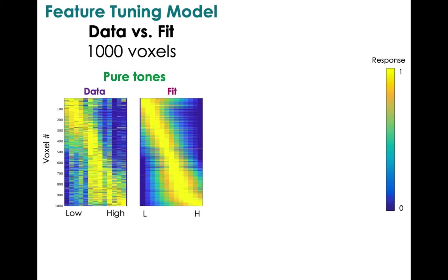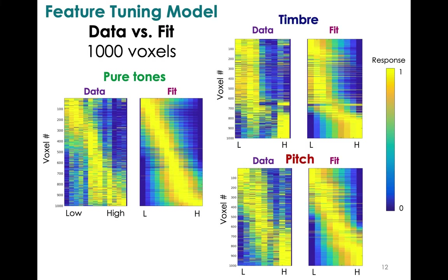Now looking at a whole bunch of voxels — on the left panel is the data for 1,000 voxels, and on the right panel is the model fit. The rows are the voxels and the columns are the different tones, ordered by center frequency going from low to high. The aim is to see how closely the left and right panels align across 1,000 voxels. We can do this for timbre and pitch conditions as well. The takeaway is that the model seems to be doing a pretty good job, given how similar the data and the fit are.